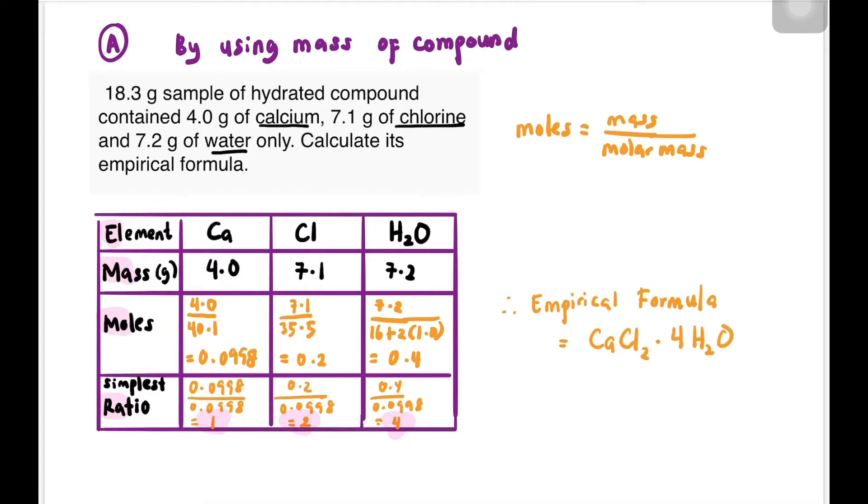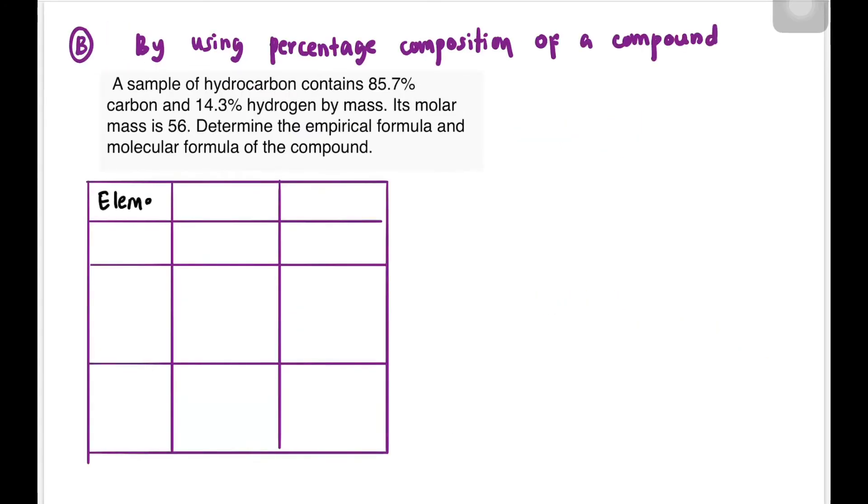Now let's go to the second case, by using percentage composition. This is a familiar example from high school. As usual, create a table with EMAMORA: element, mass, moles, and simplest ratio. In this question, the elements are only carbon and hydrogen. But they give percentages, so the first thing you must do before entering mass in your table is assume 100% equals 100 grams. Then the percentage values can be entered in the mass table.